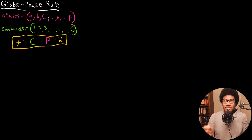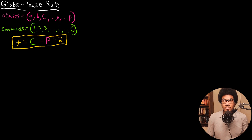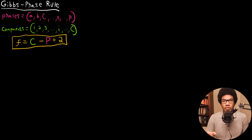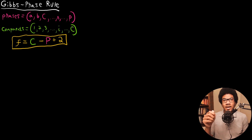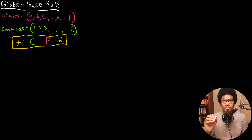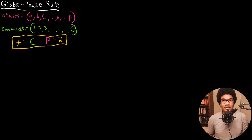Let's look at a system that has a certain number of phases — we'll call the total number of phases P — and the system has a certain number of components, C. When I use that word, I mean chemically identifiable unique components. So think about a gas mixture: if you have a gas mixture of O2 and CO2, those will be two unique components. You would only have one phase present, because it will be a mixture of both gases, but it will be two components — two different chemical entities.